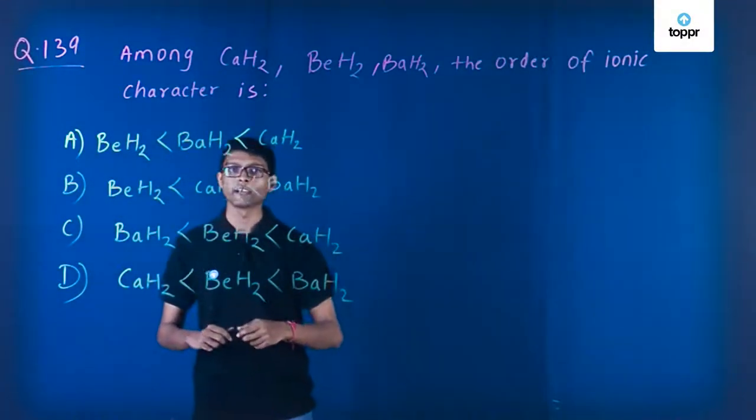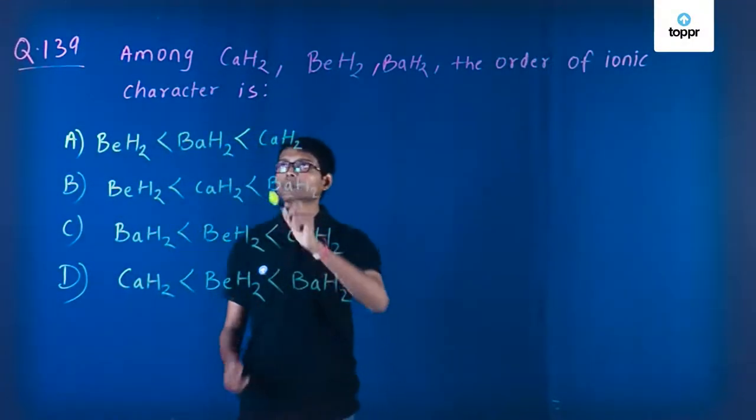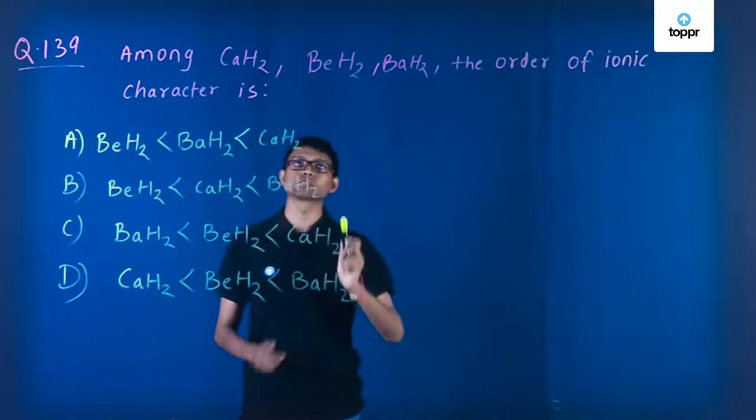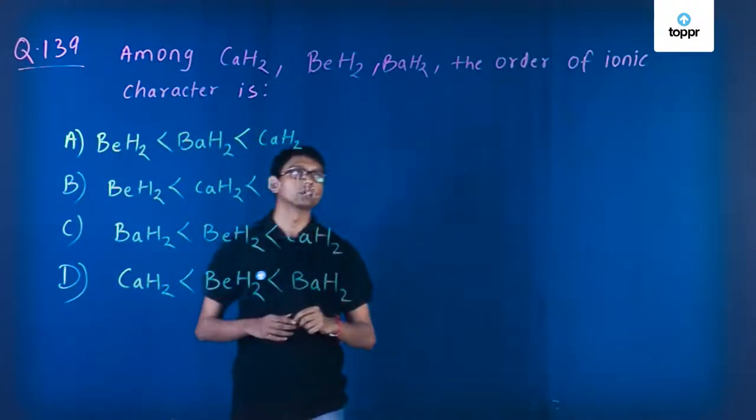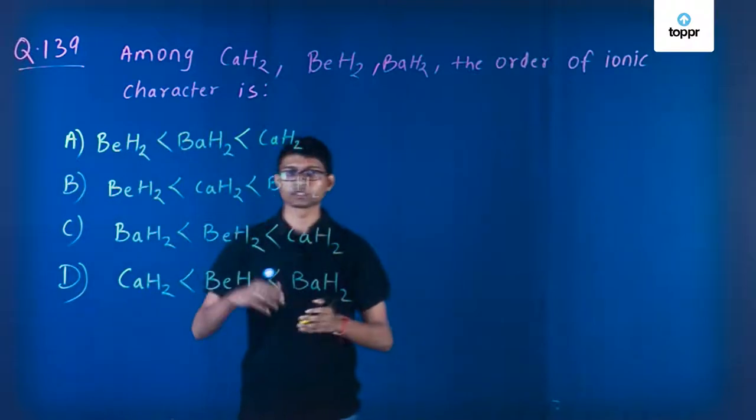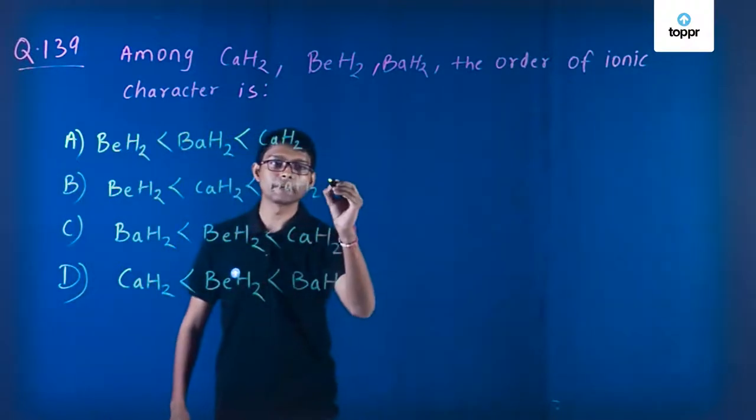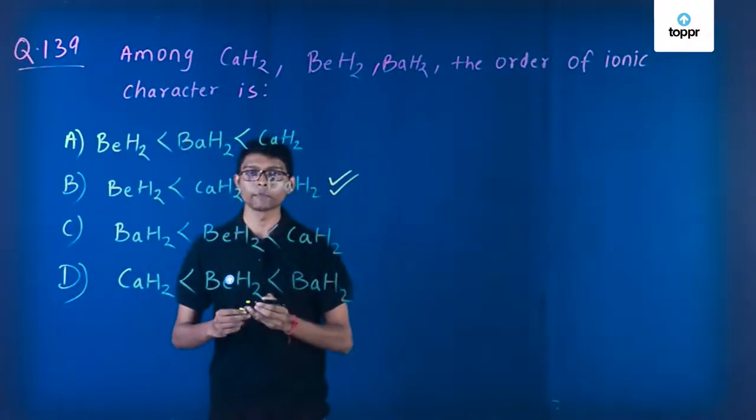This is question number 139 from the NEET paper. The question is: among CaH2, BeH2, and BaH2, the order of ionic characteristics. There are four options. Option B is the correct answer, and let me tell you how.